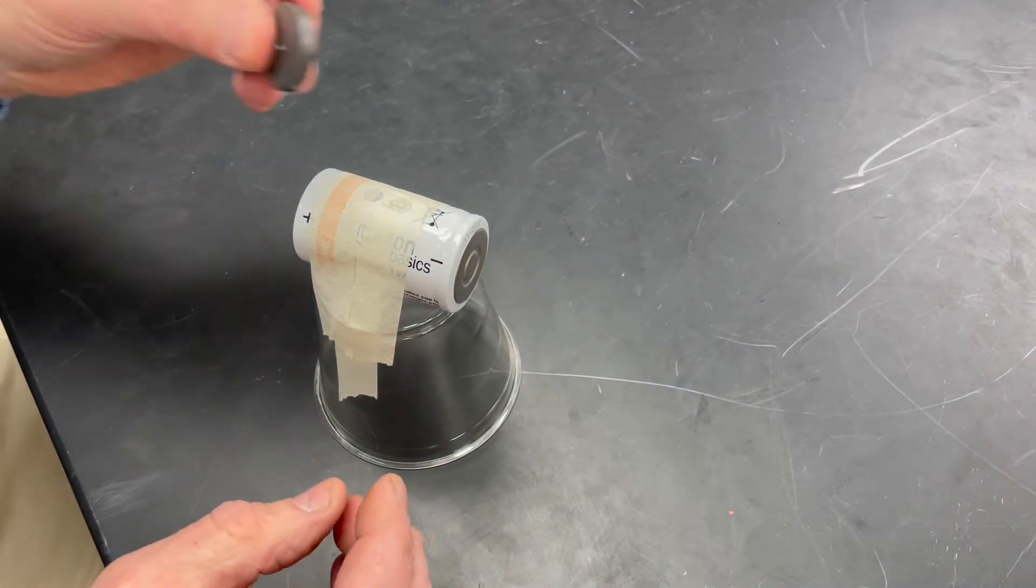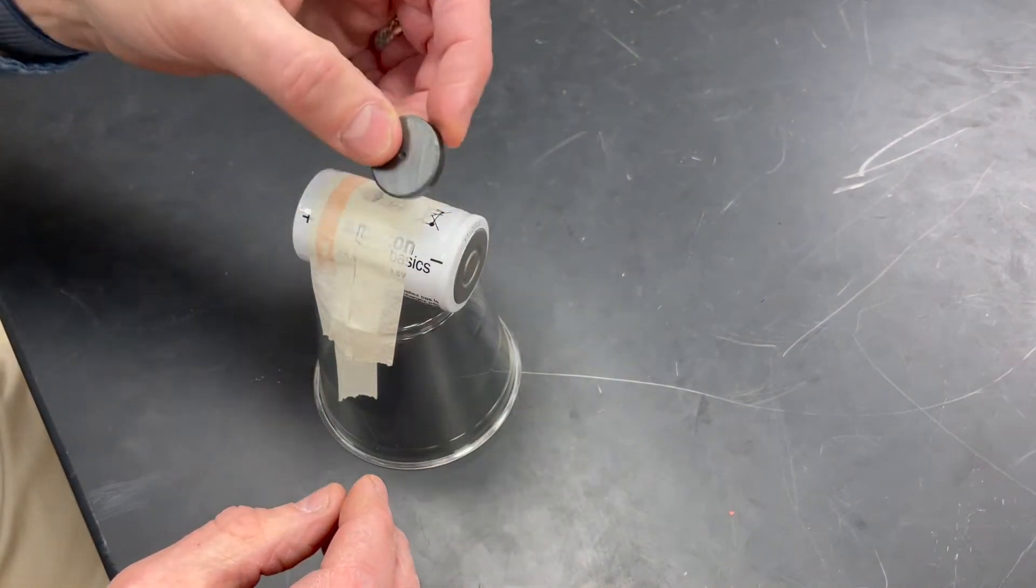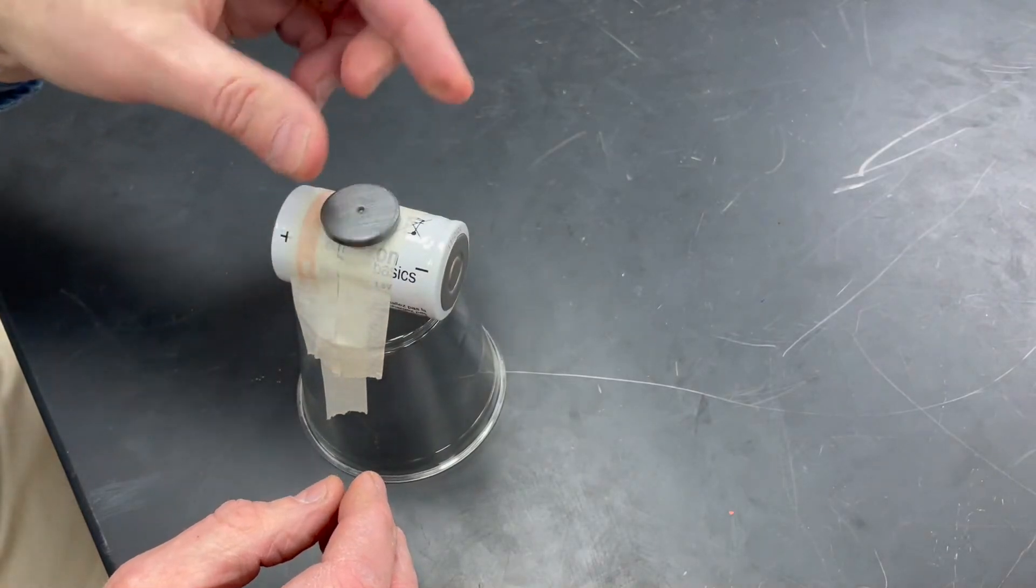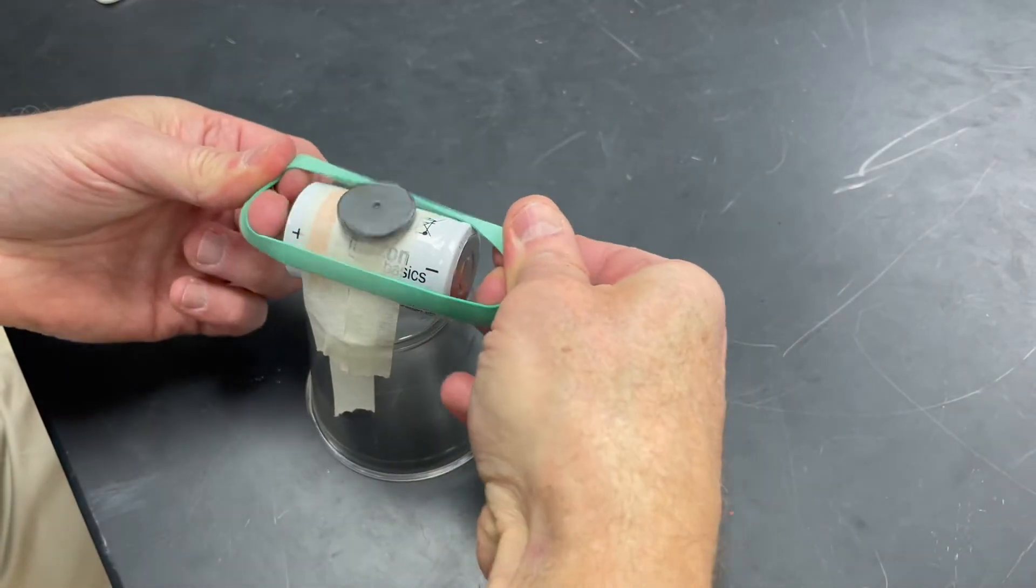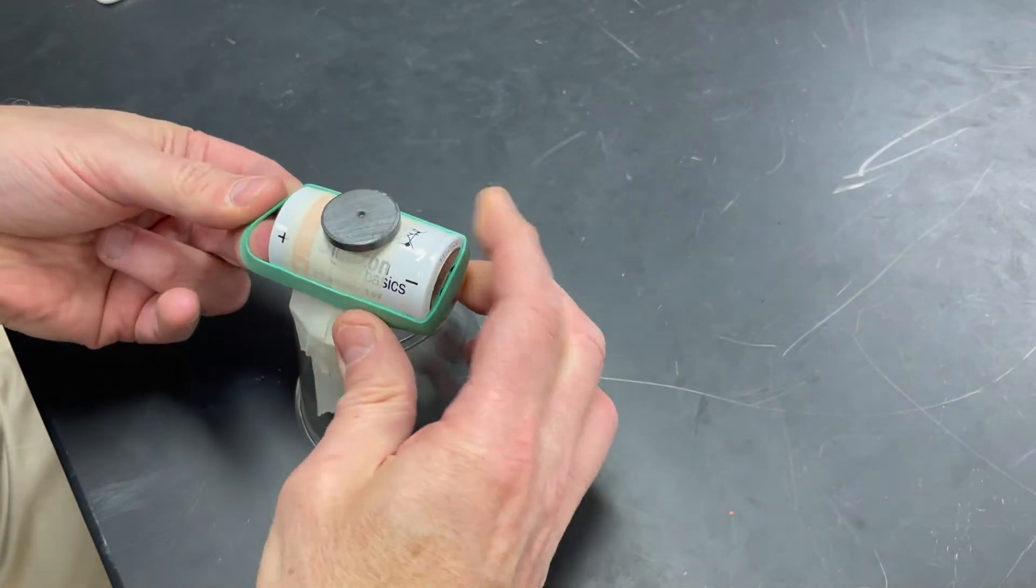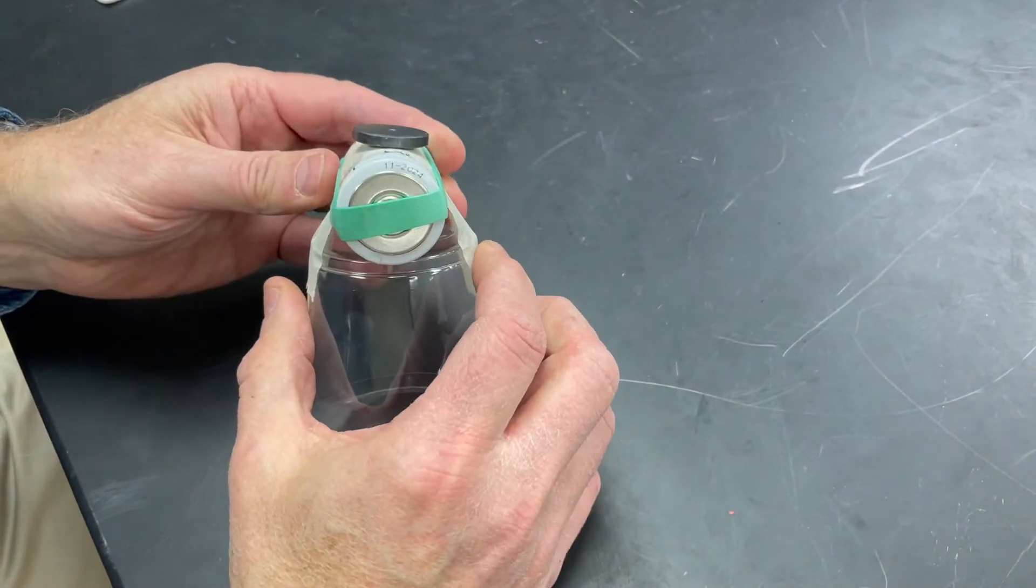You'll need a round disc magnet, like this ceramic magnet. Neodymium magnets are fine too, but this is plenty strong enough, and you see it sticks to the battery because the battery is made of steel. You don't need to tape the magnet on.